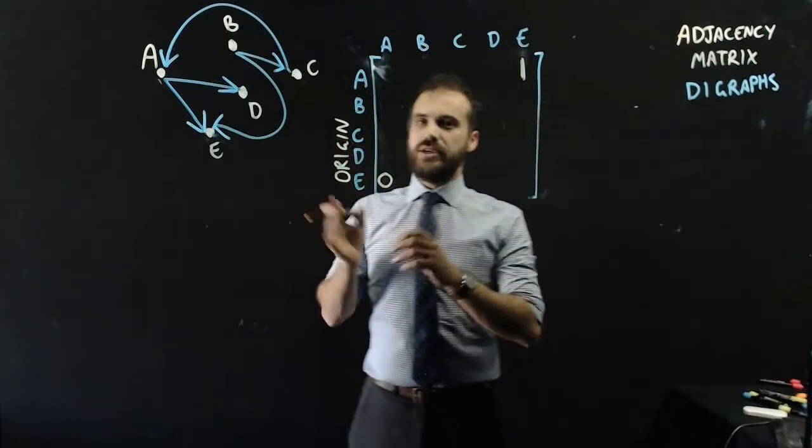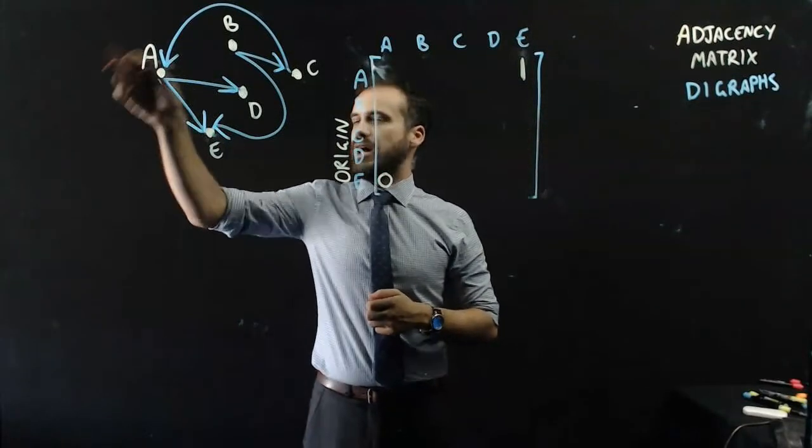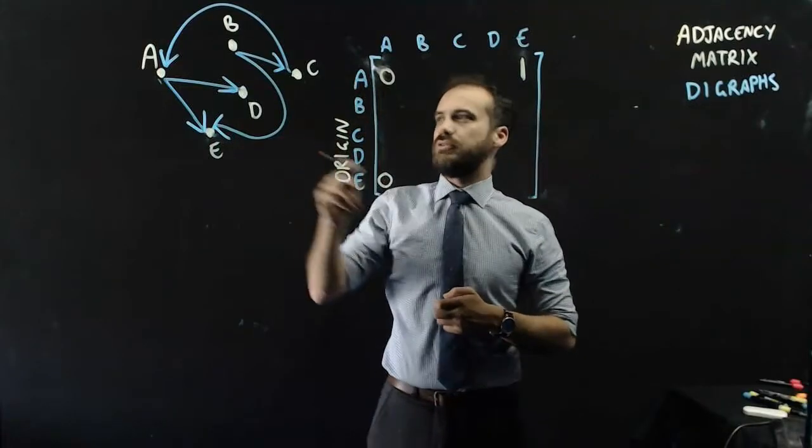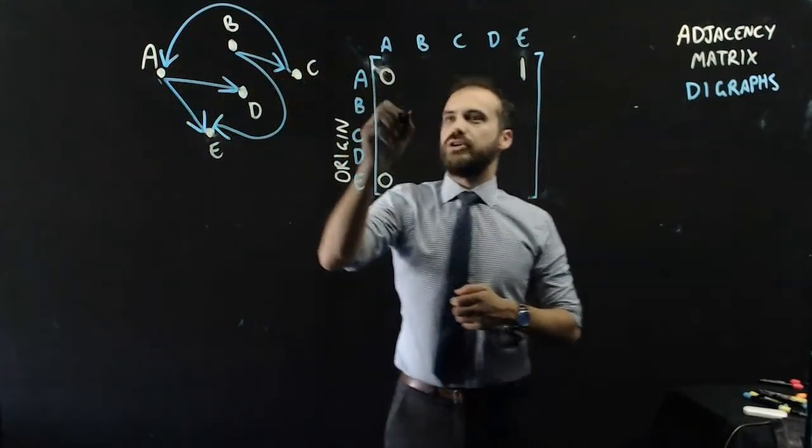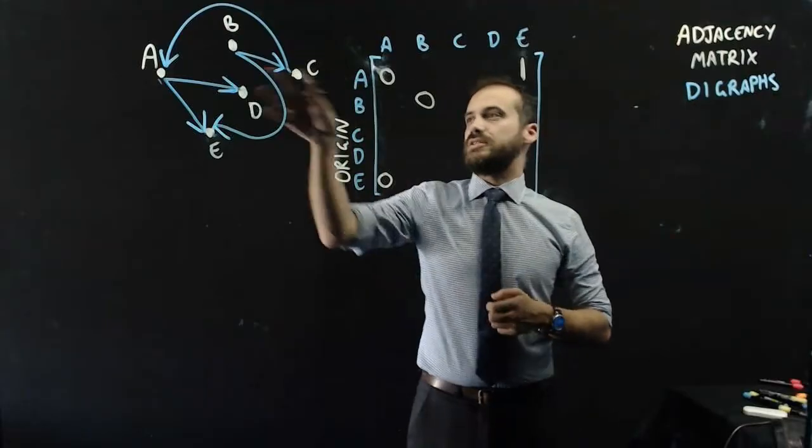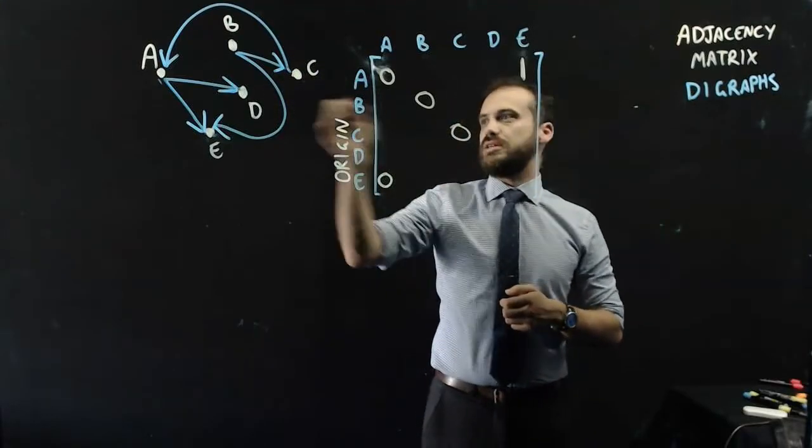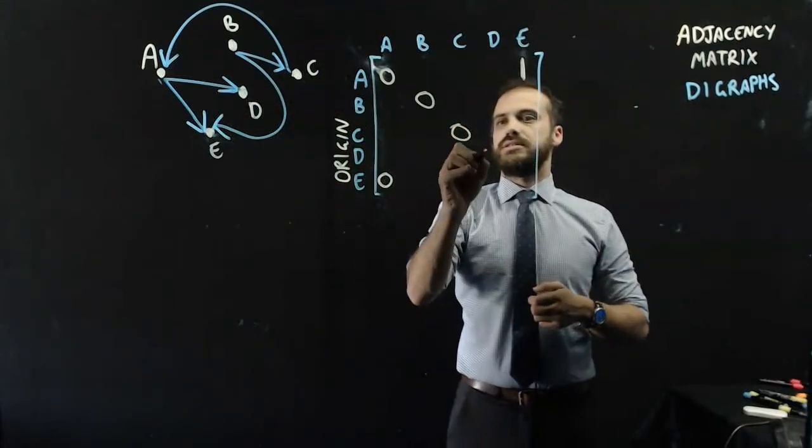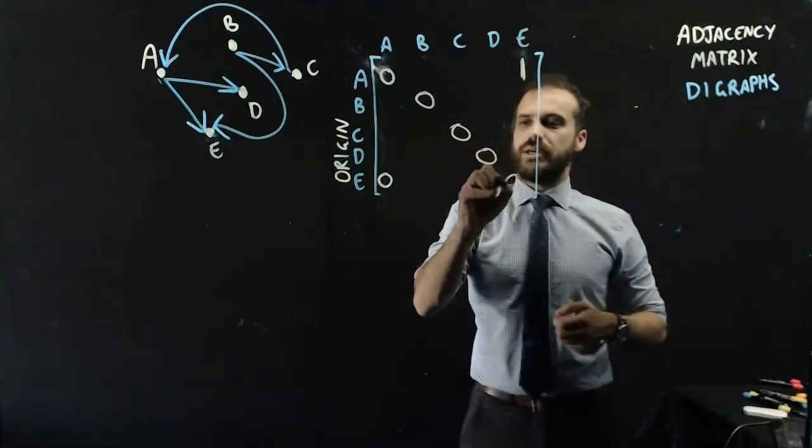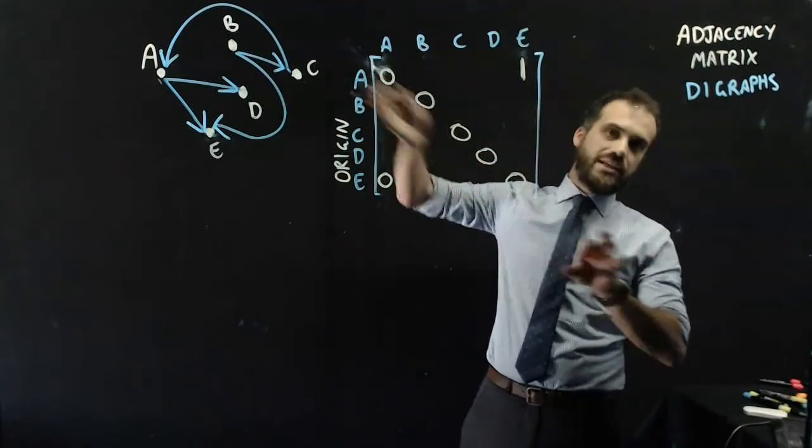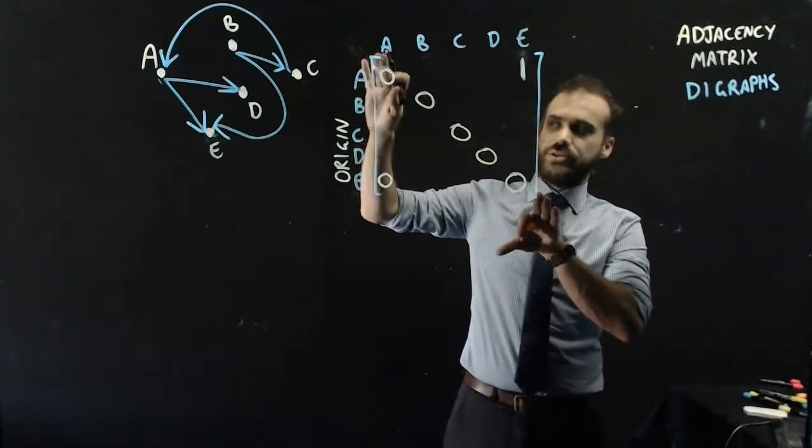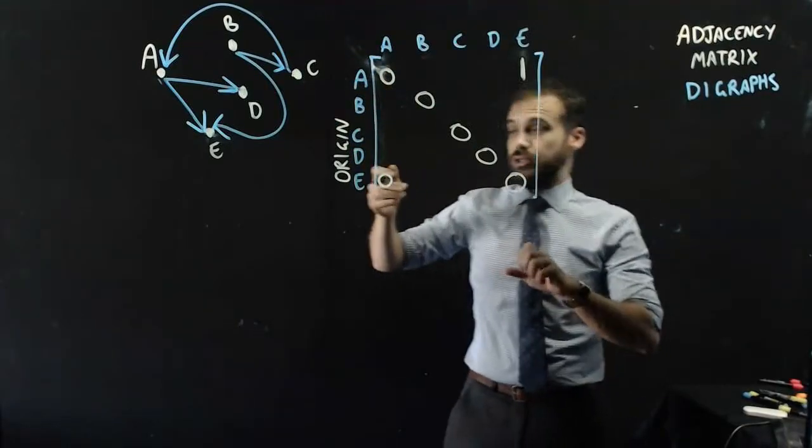So now that we've done one, let's do everything in order. A to A, there's no loop there. Zero. B to B, no loop. Zero. C to C, no loop. Zero. D to D, no loop. Zero. And E to E, no loop. Zero. So we get this diagonal of zeros if there's no loops.